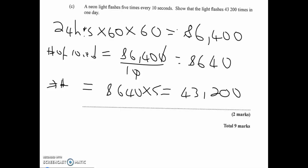Alternatively, five flashes every 10 seconds means one flash every 2 seconds. There are 86,400 seconds in a day, so 86,400 ÷ 2 = 43,200 flashes. Whichever approach seems simpler, you can take that.